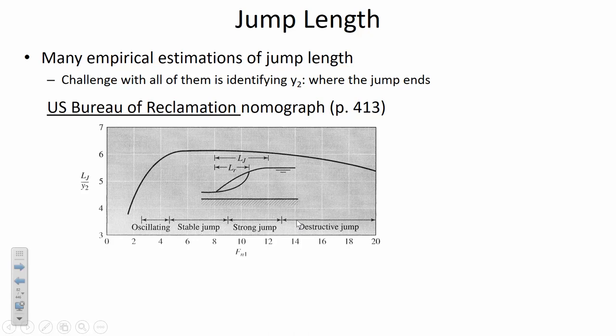For example, with a Froude number of about 2.5, you intersect the nomograph curve and read off L_j / Y2 ≈ 5. So if the depth after the hydraulic jump is 1 meter, then the jump length from the beginning of the rollers to where flow becomes basically uniform again would be 5 meters. This is somewhat subjective — visually deciding where the hydraulic jump finishes has some uncertainty.